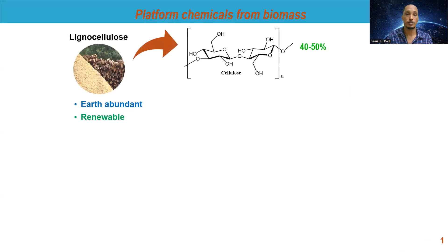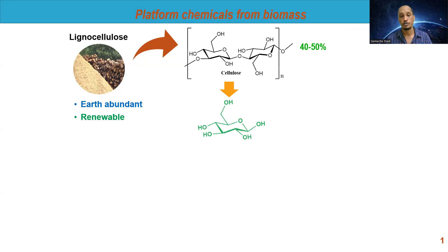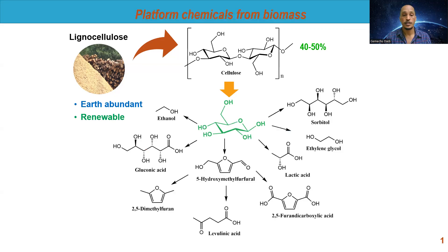Cellulose is the major component of biomass and it constitutes 40 to 50 percent on a dry basis. It contains glucose units that are connected by glycosidic bonds. Since most of the bio-based products are obtained from glucose, the conversion of cellulose into glucose is the primary step in biomass utilization. Although several catalytic systems have been established for hydrolysis of cellulose into glucose, there is still a big research gap to be improved.